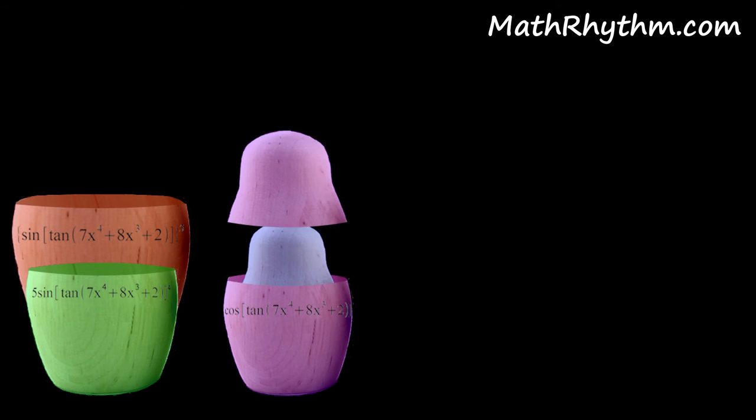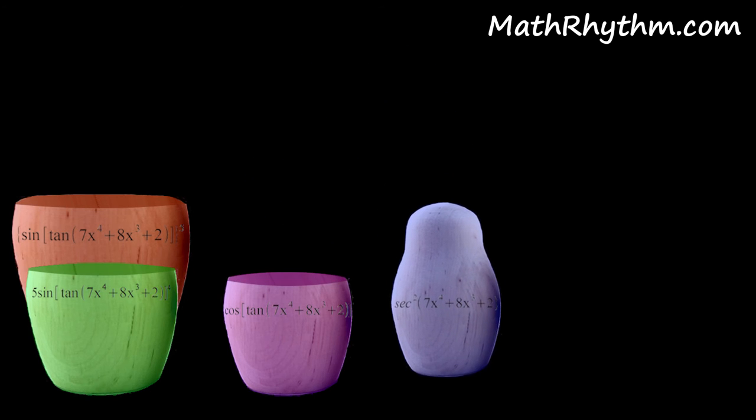Now you're ready to take the derivative of that function. So, the derivative of tangent is secant squared. Again, leave the polynomial alone.